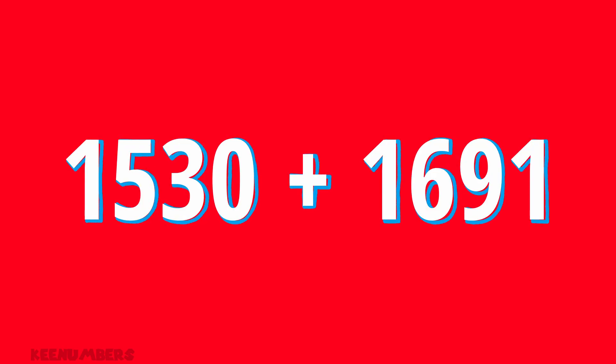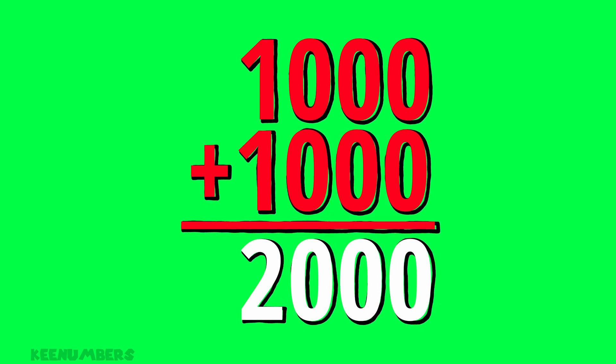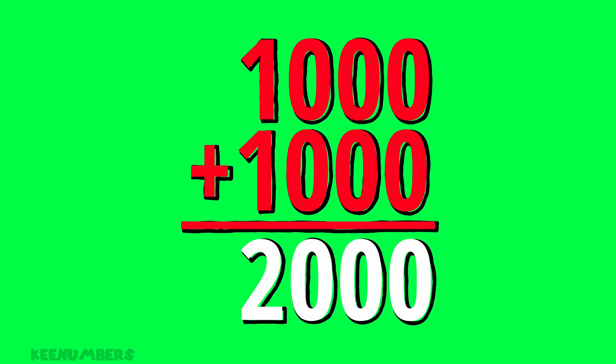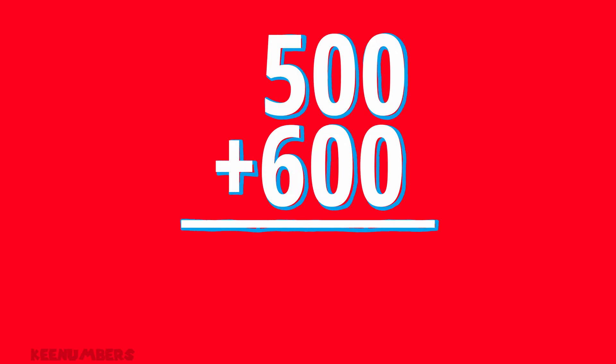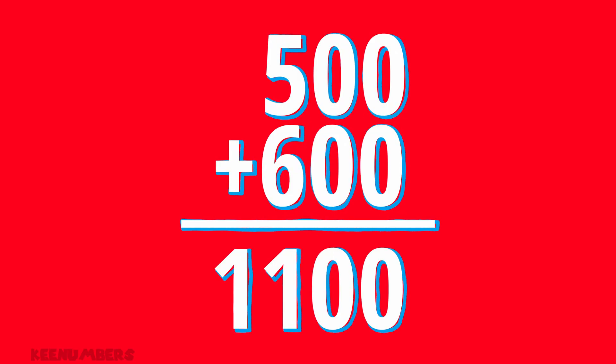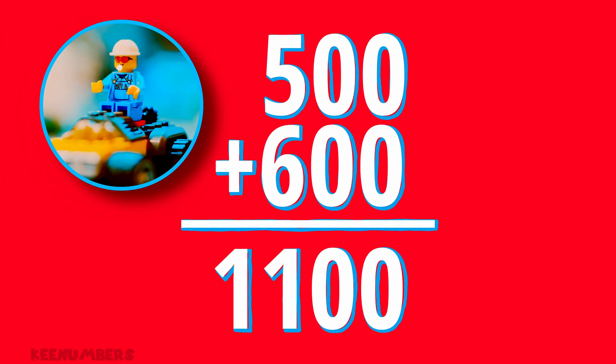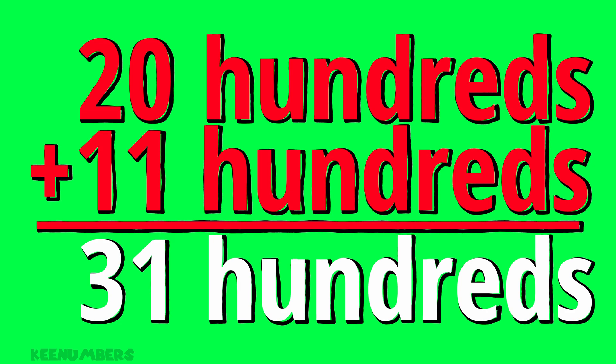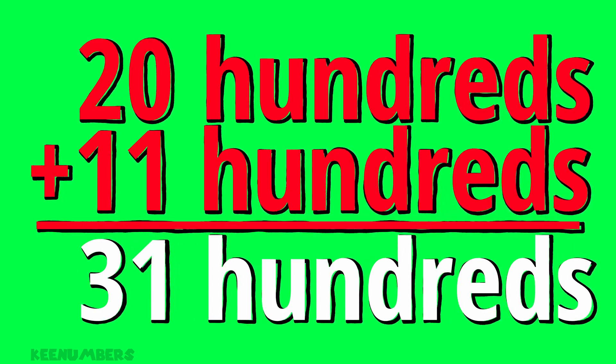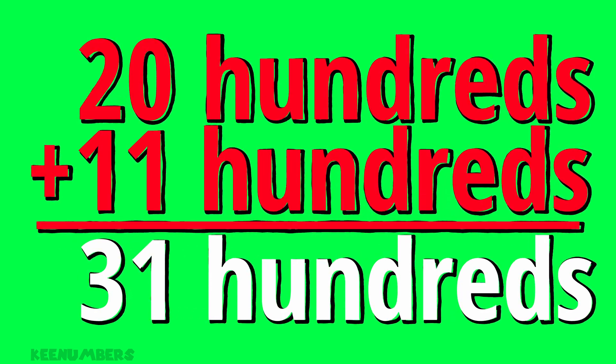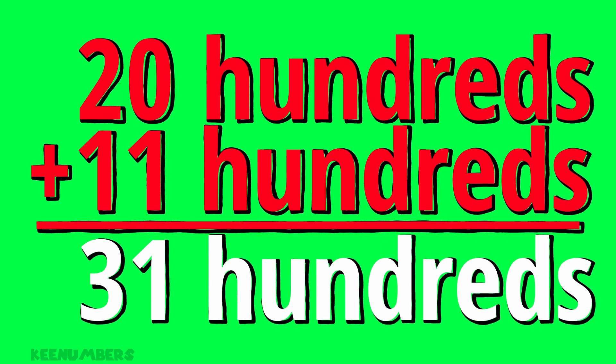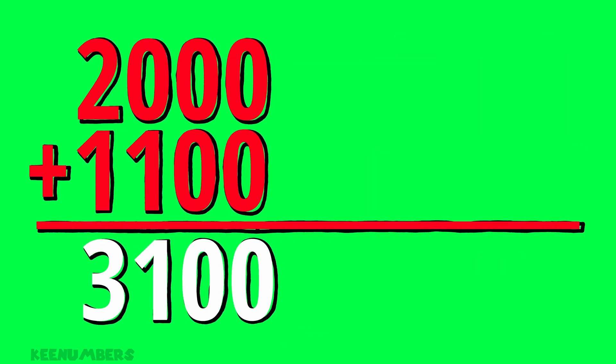One thousand five hundred and thirty plus one thousand six hundred and ninety one. Buckle up. One thousand plus one thousand is two thousand. Park that. Five hundred plus six hundred is eleven hundred, so far that means we have twenty hundreds and eleven hundreds or twenty plus eleven which is thirty one. Thirty one hundreds, AKA three thousand one hundred.